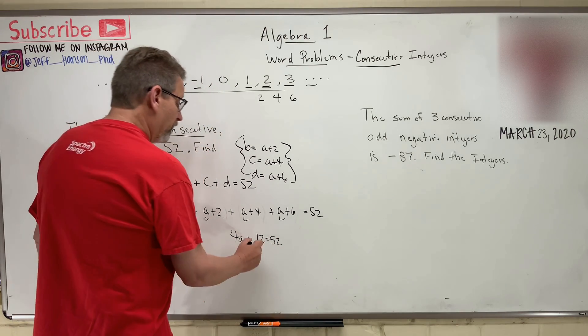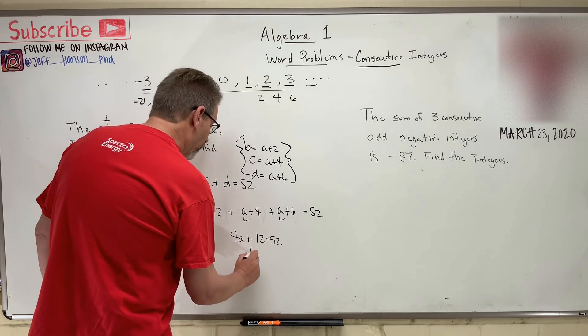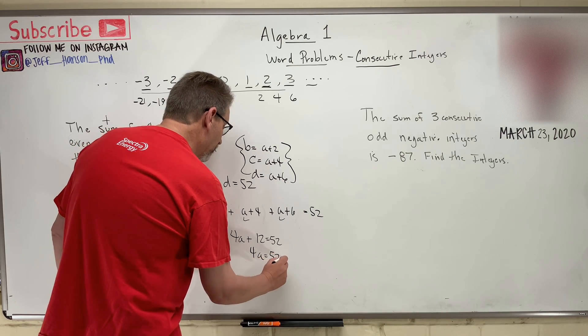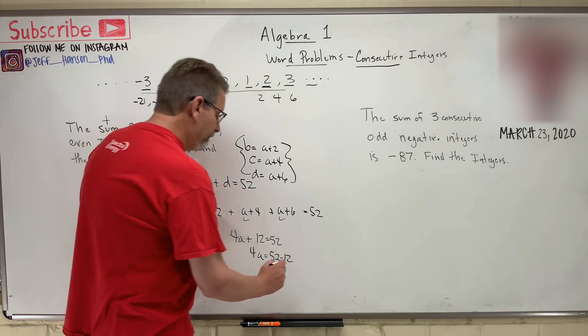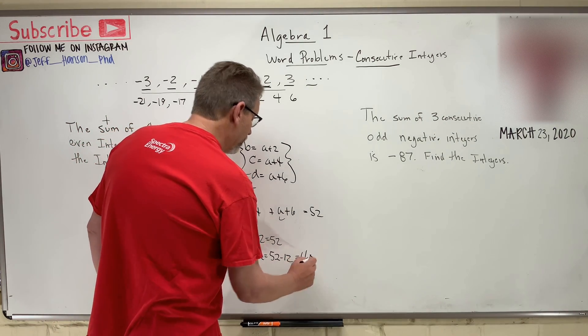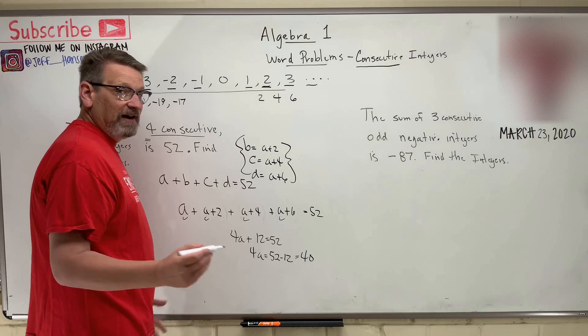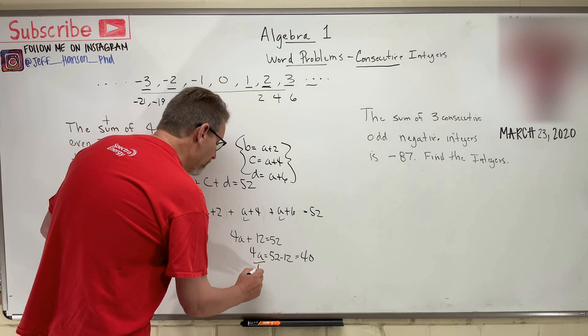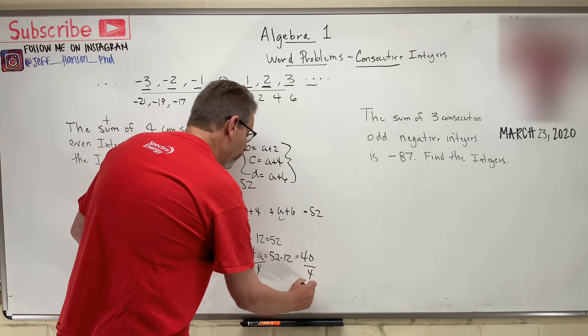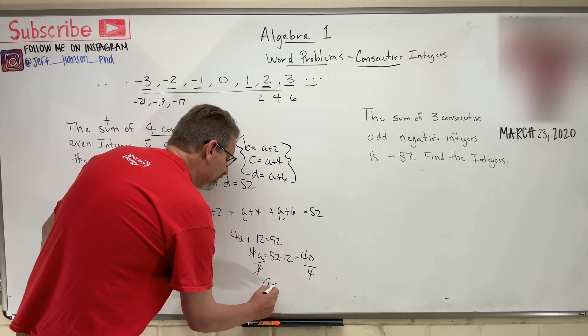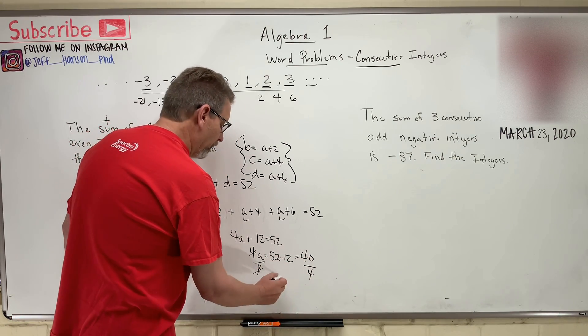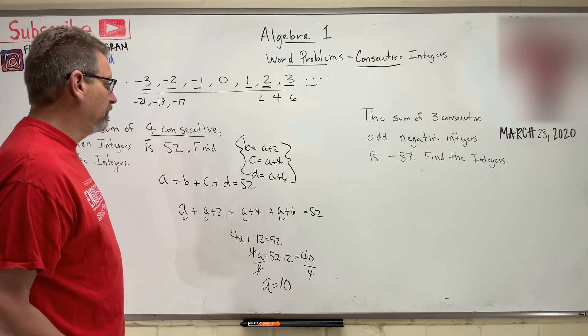Now, we're going to get that to the other side, right? So four A equals 52 minus 12, and 52 minus 12 is 40, right? And let's divide both sides by four, divided by four, divided by four, right? The fours go away, and so I get A is equal to what's 40 divided by four? 10, okay?